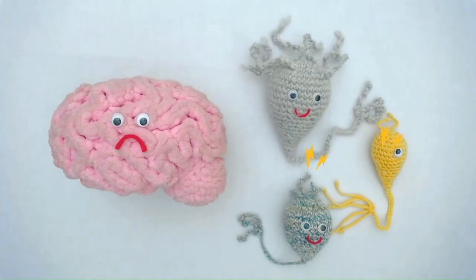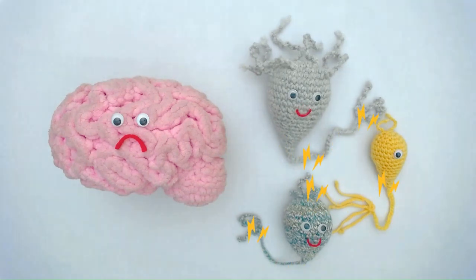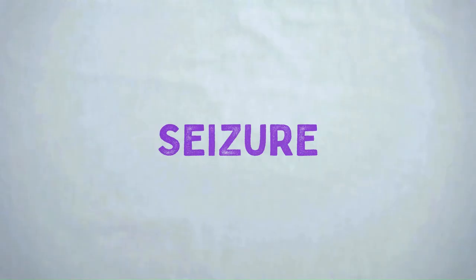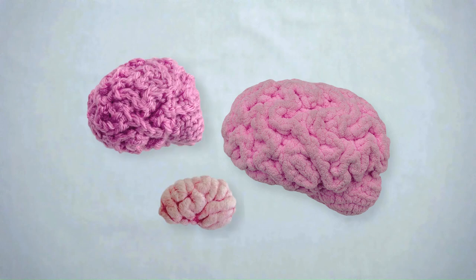If your brain gets unhappy, perhaps because you have been sick or hurt, its neurons can get a bit cheeky and start to send too many electrical messages. This is called a seizure, and it can stop your brain from working properly.